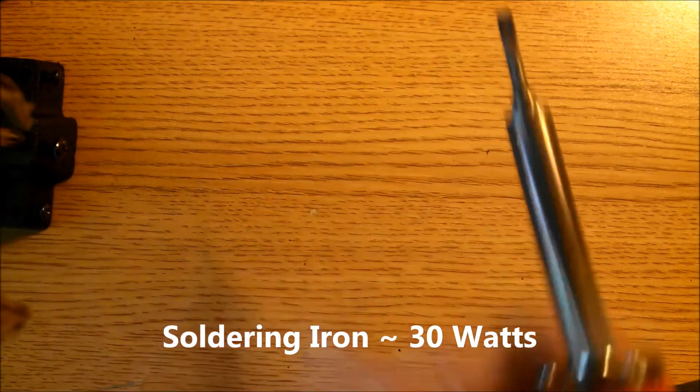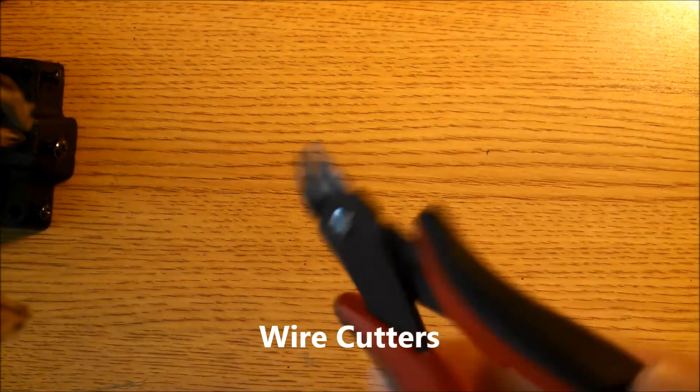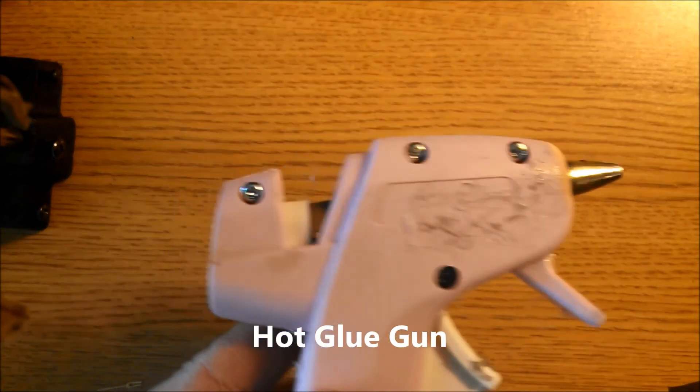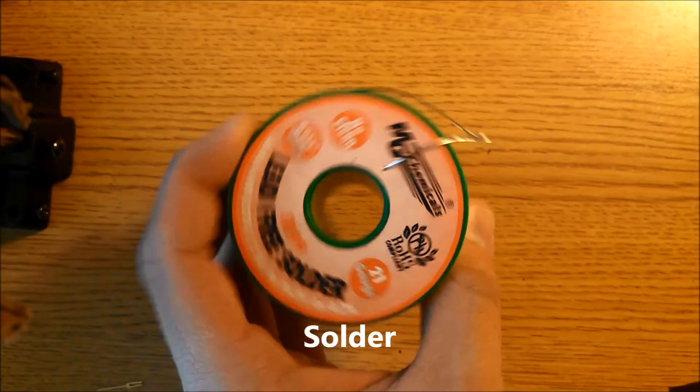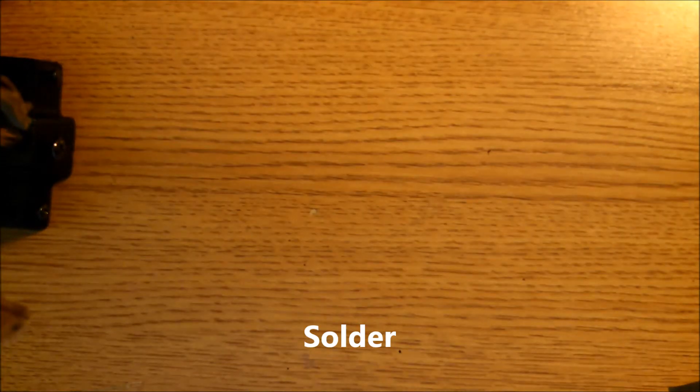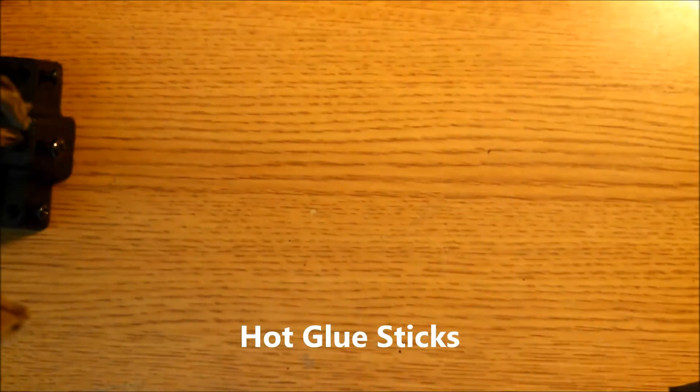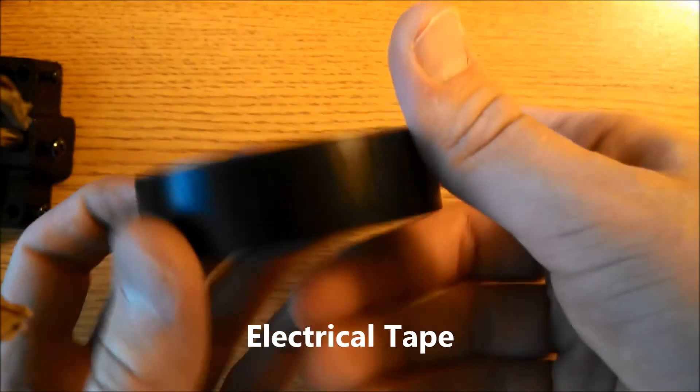You'll need a soldering iron, wire cutters, a hot glue gun, solder, some hot glue sticks for the hot glue gun, and some electrical tape. And that is all the parts you require to complete the Gaiman LED display.